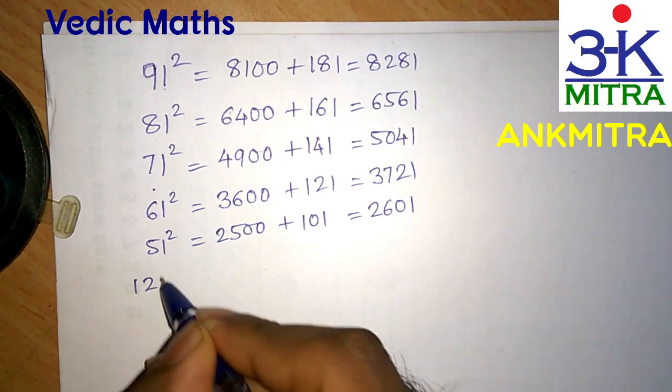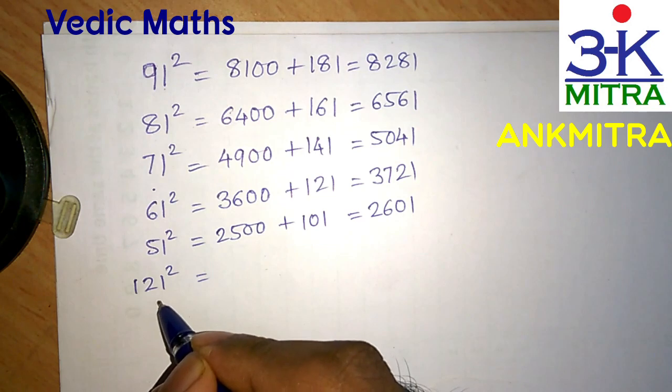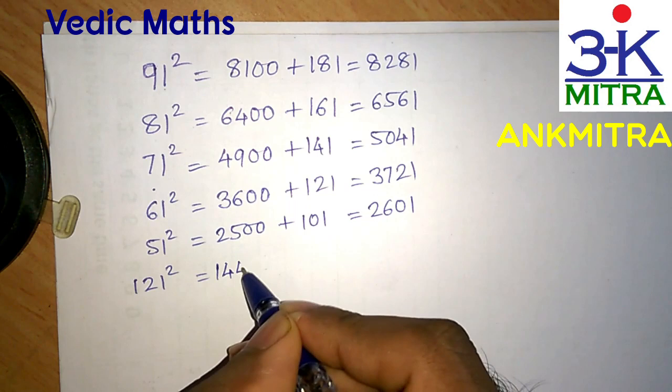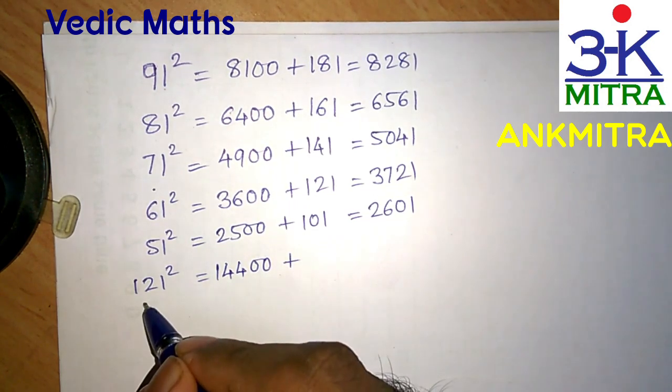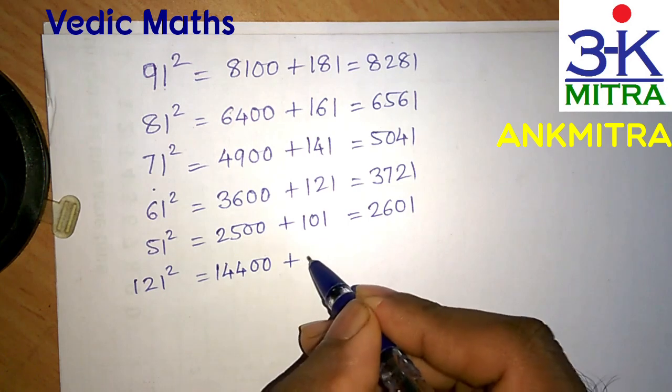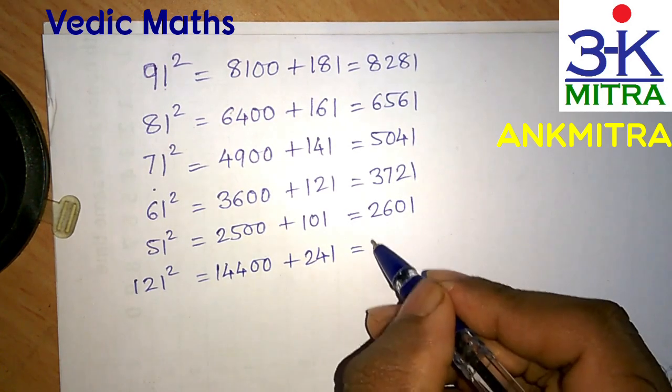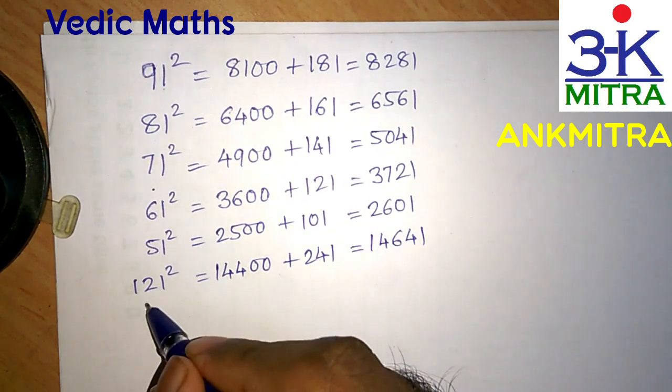For 121 squared, the round number near it is 120. First write down the square of 120, which is 14400, then add 120 plus 121, which gives us 241. The addition of these two numbers is 14641, which is the square of 121.